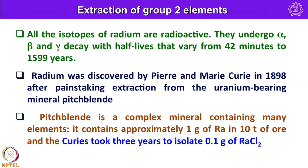All isotopes of radium are radioactive, undergoing alpha, beta, and gamma decay with half-lives ranging from 42 minutes to 1599 years. Radium was discovered by Pierre and Marie Curie in 1898 through painstaking extraction from the uranium ore pitchblende — a complex mineral containing many elements and radioactive isotopes of heavier elements. Pitchblende contains approximately 1 gram of radium chloride per 10 tons of ore, and the Curies took nearly 3 years to isolate just 0.1 gram of radium chloride.